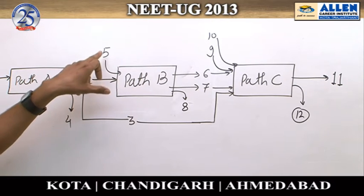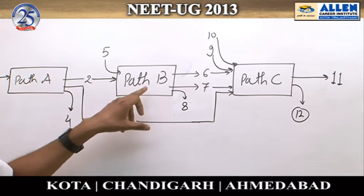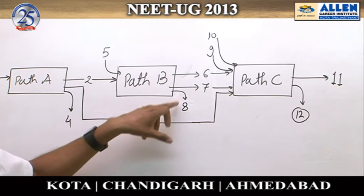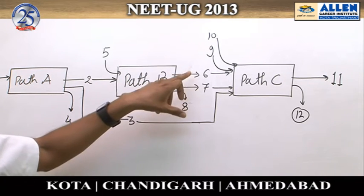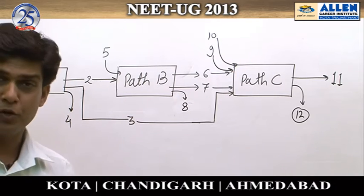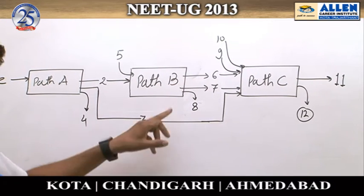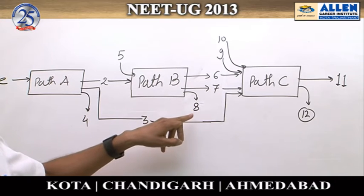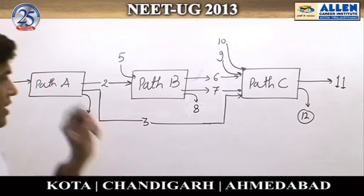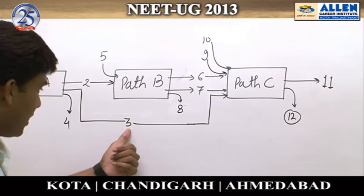Number five indicates the coenzyme involved. As the Krebs cycle progresses, we obtain numbers six, seven, and eight. Numbers six and seven are the reactants of path C, meaning these are the NADH and FADH2. Number eight is one of the net gains of this path — as we know, it is ATP.